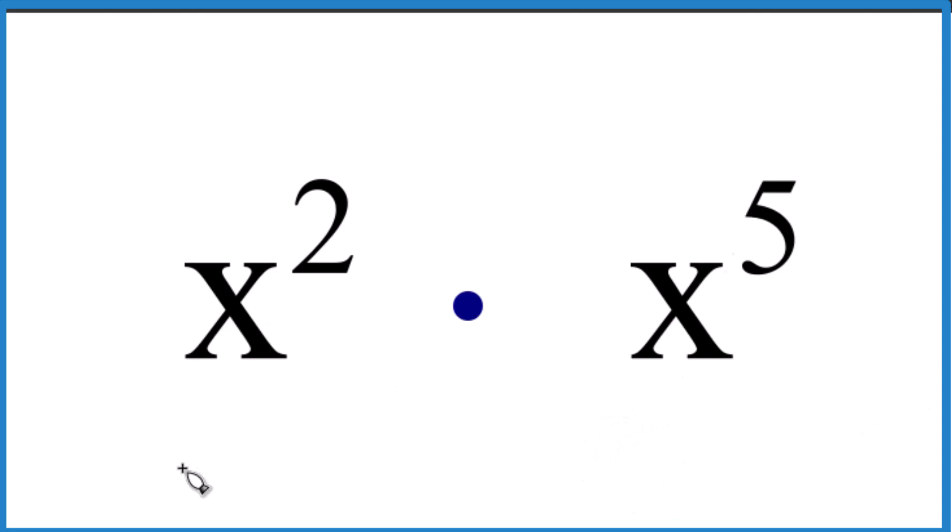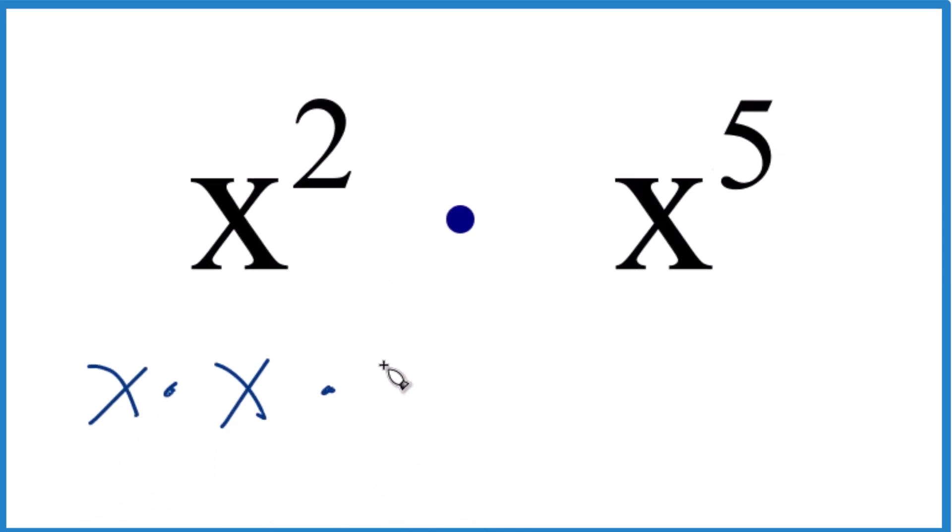The first way is we could say we have x times x, that's our x squared, and multiply that by x to the fifth.